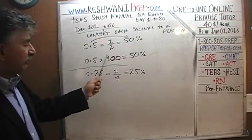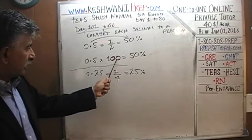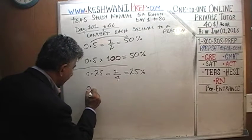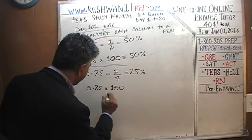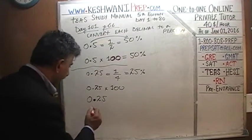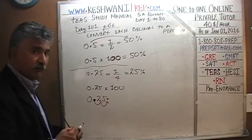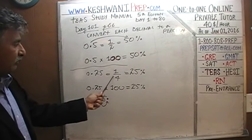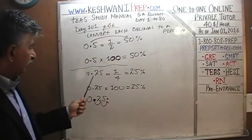Same as before — we take the decimal and multiply it by 100. Because 100 has two zeros, we move the decimal place two spots to the right: one and two. So 0.25 becomes 25 — and of course, as we said, a quarter of something is 25 percent. So 0.25 when converted into percentage is 25 percent.